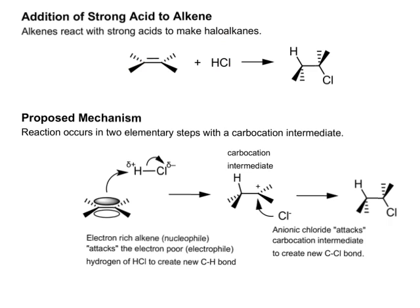At the end of the day, when you react a strong acid with an alkene, you get what I'm calling a haloalkane or a halogenated alkane. What we've done is taken the carbon-carbon double bond and turned it into a carbon-carbon single bond, while creating a new carbon-hydrogen single bond and a new carbon-chlorine single bond. The net transformation is the elimination of the double bond and the creation of those two new single bonds.